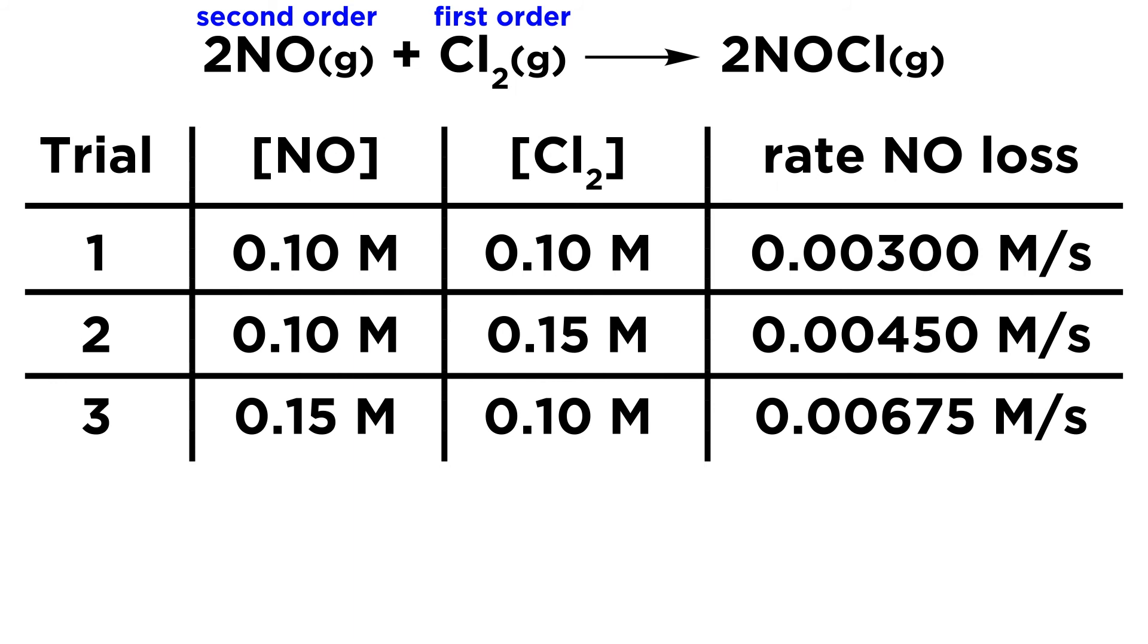If the concentration increases by some factor and the rate increases by that factor squared, that is second order. If the concentration were to increase by some factor and the rate were to increase by that factor cubed, that would be third order. So we're beginning to see the arithmetic relationship here, and we can probably apply this to really any situation with initial rates, not just the oversimplified ones.